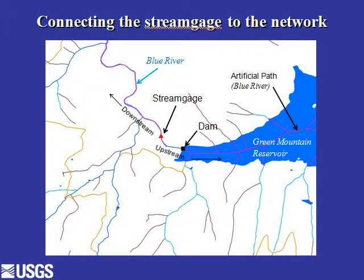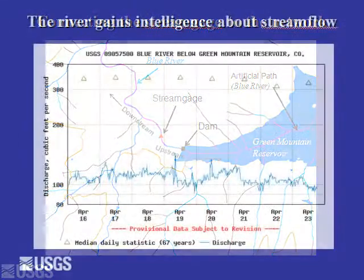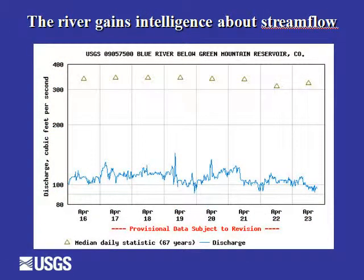This is an example in Colorado where there's a stream gauge on the Blue River, which drains out of the Green Mountain Reservoir. Putting it on the NHD makes the stream gauge smarter. The stream gauge makes the NHD more intelligent — in this case the stream gauge knows that there is Green Mountain Reservoir upstream, it knows how many miles of stream are feeding into it, and it also knows what's downstream where the Blue River will flow into the Colorado River. This is how the stream gauge makes the NHD more intelligent, because now we know how much water is flowing out of the Green Mountain Reservoir.